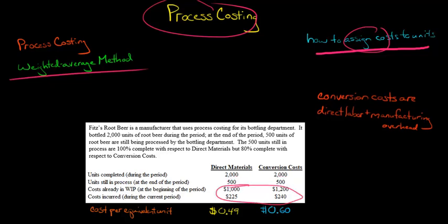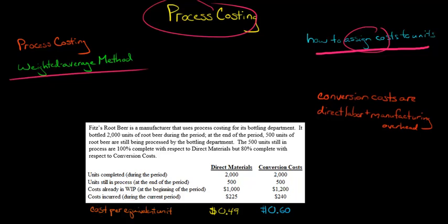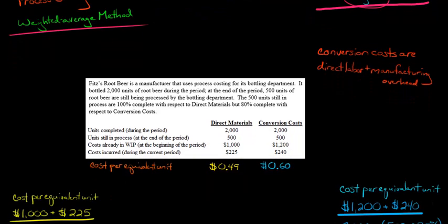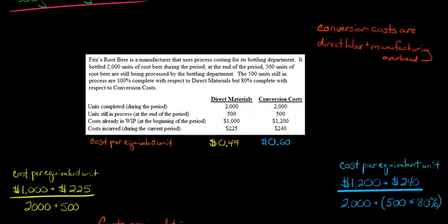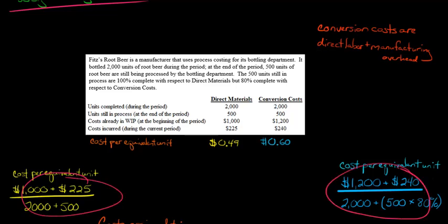So those 2,000 are done, but there are 500 still in process, and how do we split the costs up among those different units — the ones still in process and the ones that have been transferred out? To do that, we need something called the cost per equivalent unit. I showed you how to calculate that in the last video, but it's basically 49 cents a unit for direct materials and 60 cents a unit for conversion costs. Here's how those calculations were made.